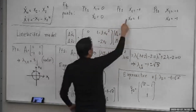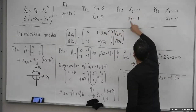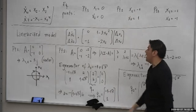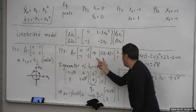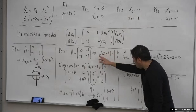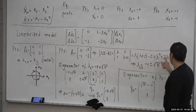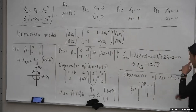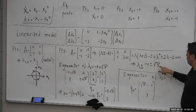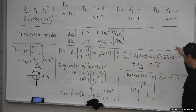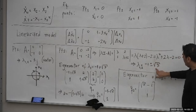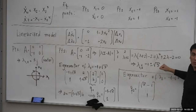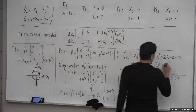Now we repeat the same thing for equilibrium point two, where x1 equals negative one and x2 equals one. We replace those values and obtain a new matrix A. Solving the resulting quadratic gives us eigenvalues that are real. Since the square root of three is approximately 1.73, one eigenvalue is negative and the other is positive — so what we have here is a saddle node.